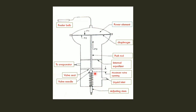This is the thermostatic expansion valve in the refrigeration system. This is the liquid inlet. This is the hot liquid refrigerant. This is a cabin or compartment. We are going to apply spring pressure on this valve. That pressure is already set.